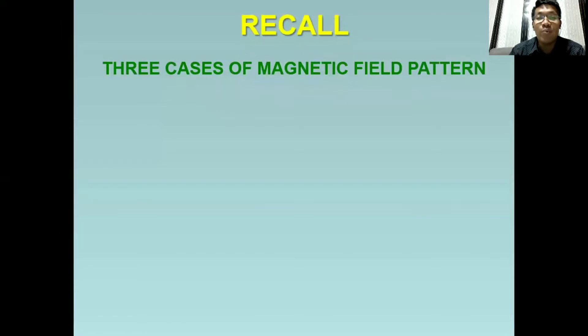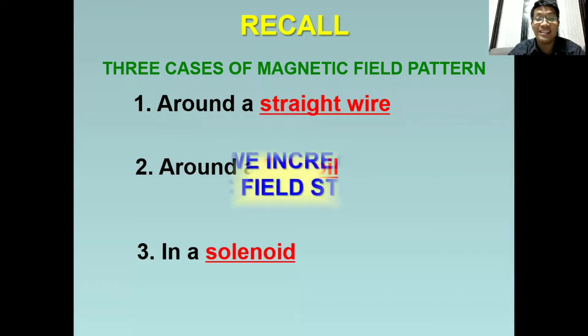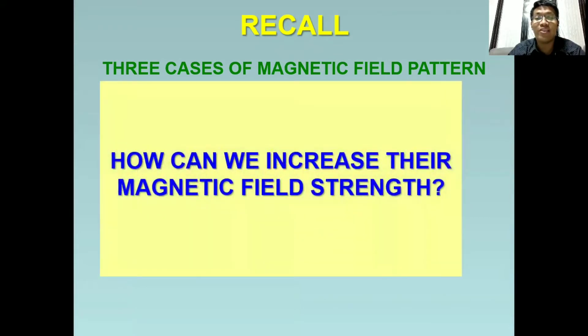Let's have a short review or recall. In the previous video, we talked about the three cases of magnetic field patterns. And these are around the straight wire, around the flat coil, and in a solenoid. So the question here is, how can we increase their magnetic field strength?